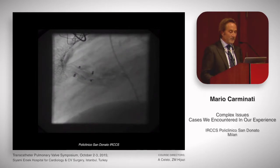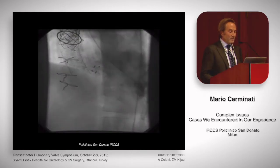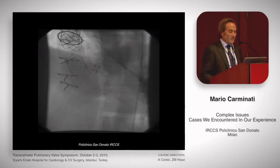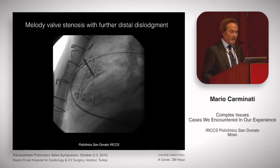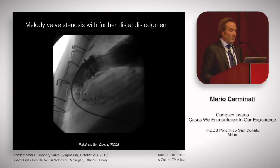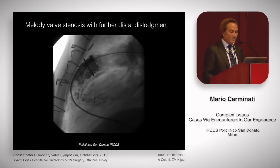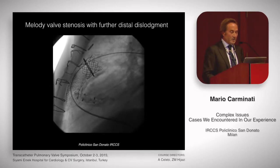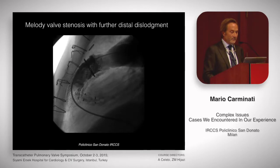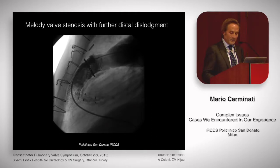The device is released from the delivery cable. Control angiogram demonstrated a very good result with a tiny residual leak, so we were very happy. But of course the problem of the stenotic Melody valve was still there. You see this large valve just outside the stent, with systemic pressure in the right ventricle.